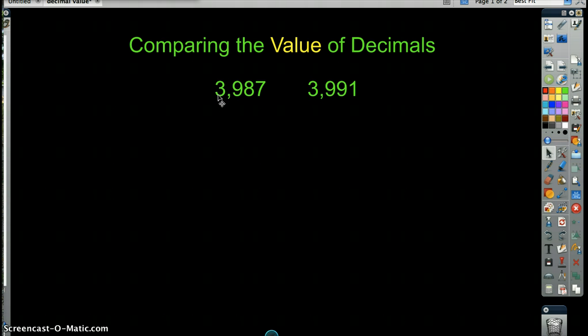This number here has 3 in the thousands column, so it's 3,000. This number has 3 in the thousands column, so it's 3,000. They're equal so far. After comparing the thousands column, we'd move to the hundreds. And this one has 9 in the hundreds column, which is 900. This one has 9 in the hundreds column, which is 900. So far, they are equal.